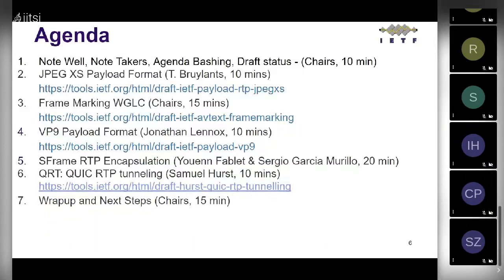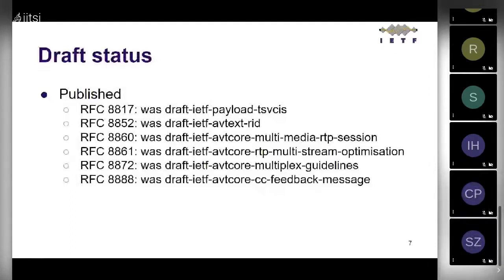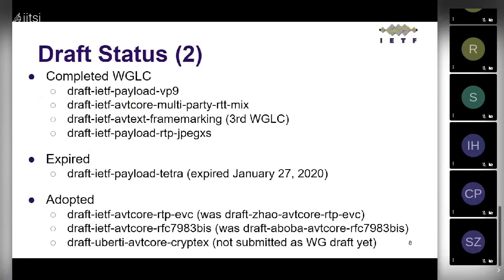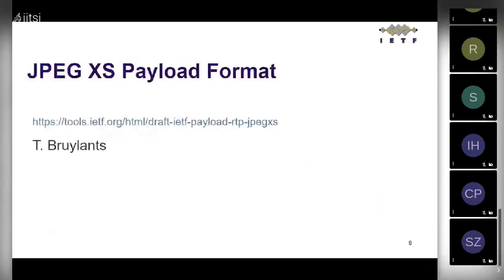On draft status: we've published a whole ton of RFCs, many of them in cluster 238. We have four drafts that have completed working group last call, three of which we'll talk about today. We have one expired draft — Jonathan has an action item to follow up on that. We've adopted three documents: the EBC draft, CryptX, and 7983 bis.